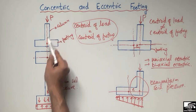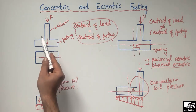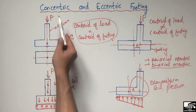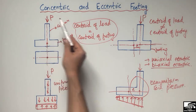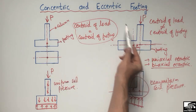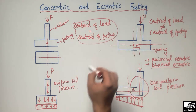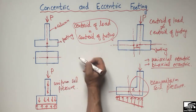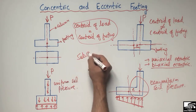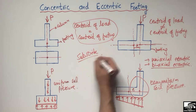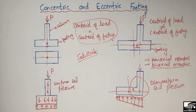The main difference between these two types of footing lies in their centroid: if the load centroid coincides with the footing centroid, it is called concentric footing; if it does not coincide, we call it eccentric footing. For Elisable Engineering videos, don't forget to subscribe to my channel. Thank you for watching.